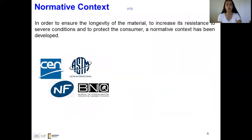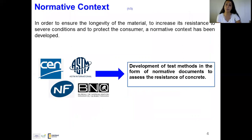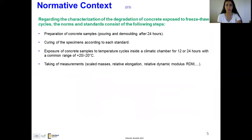In order to ensure the longevity of the material, to increase its resistance to severe conditions, and to protect the consumer, a normative context has been developed — such as the work of CEN, ASTM, NF, and BNQ. Their main aim is to develop methods in the form of normative documents to assess the resistance of concrete.